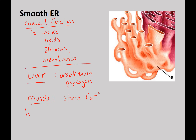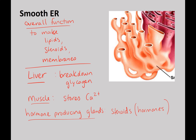In hormone-producing glands, the smooth ER makes steroids — one type of which is hormones. You know one type of steroid is cholesterol. Some cells are secreting estrogen, testosterone, or cortisol, and those steroids are made in the smooth ER of specific glands.